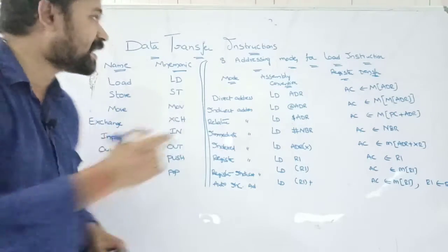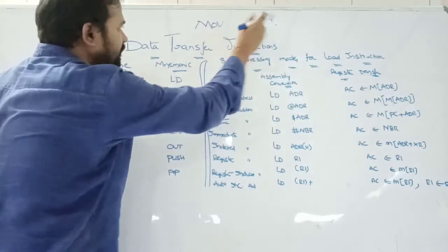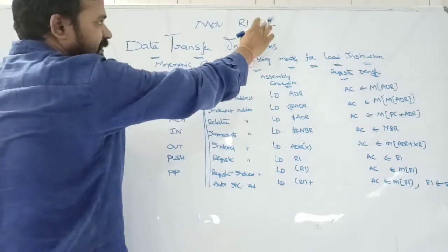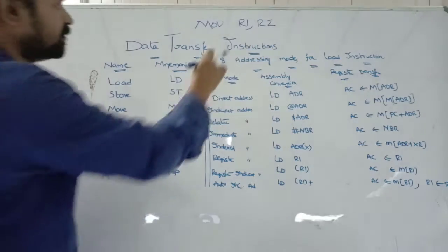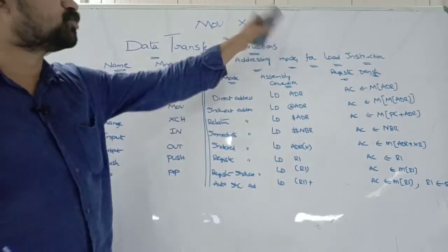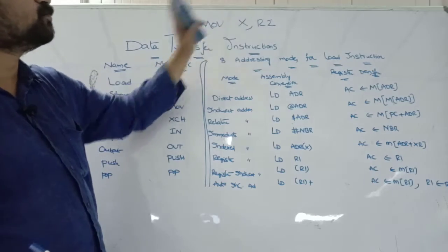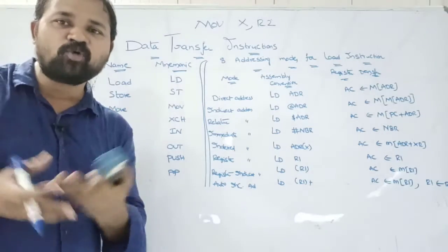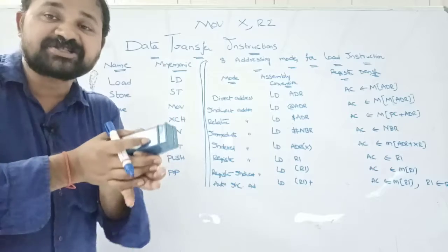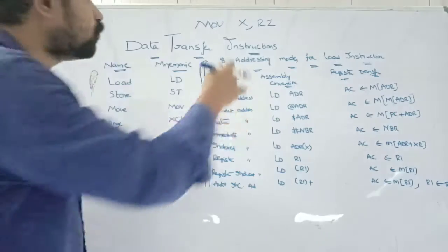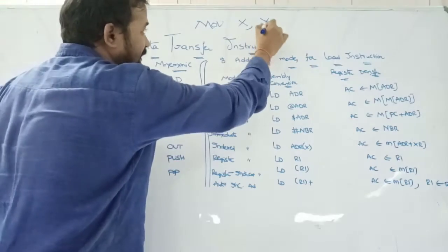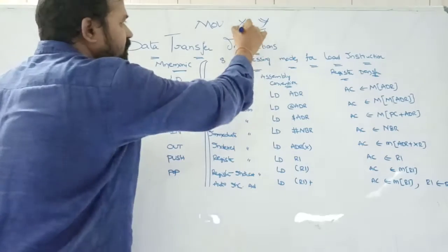MOVE instruction is useful to transfer data from one register to another register. For example, 'MOV R1, R2' moves the content of R2 to R1. By using MOVE we can also transfer data from a register to memory — the content of R2 can be moved to memory location X. Likewise, MOVE can transfer content between registers, between memory locations, or between a register and a memory location.